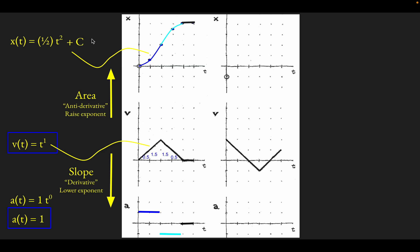To figure out what this constant is, we look at a known position — where we start. We know that x at t equals zero is equal to zero. So if we plug in t equals zero, we learn that c equals zero. In all its glory, we have the position function: one half t squared. If you do this power-lowering trick going from x of t to velocity, you'd get two times one half times t, which is just t — in agreement with what we get for the velocity function.